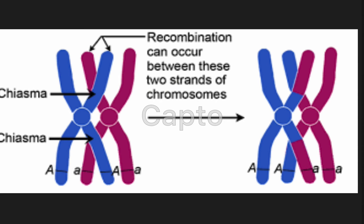This is where the importance of chiasmata comes in. A chiasma is the point of contact — the physical link — between two chromatids belonging to homologous chromosomes. At a given chiasma, the exchange of genetic material can occur between both chromatids, as we now know is referred to as chromosomal crossover.